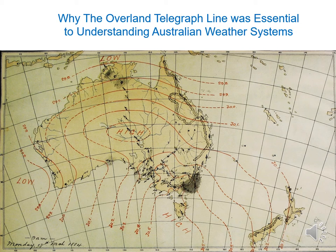This was all thanks to the data sent by the telegraphists of the Overland Line. We should also recognize our compatriots working on the east-west line between South Australia and Western Australia, which was completed six years after the OT. They provided the all-important readings along the Bight that brought Western Australia into the system.